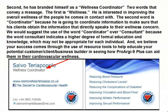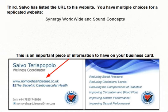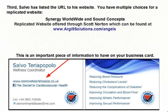We believe your success comes through the use of resource tools to help educate your potential customer, client, or business builder in seeing how ProArgent Plus can aid them in their cardiovascular wellness. Third, Salvo has listed the URL to his website. You have multiple choices for a replicated website. There is the replicated website offered through Synergy Worldwide and Sound Concepts, which you can access in your back office by clicking on the My Synergy icon. You also have access to the replicated website offered through Scott Norton, which can be found at argininesolutions.com/angels.